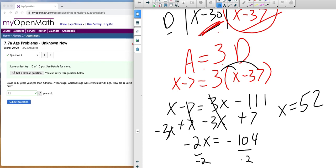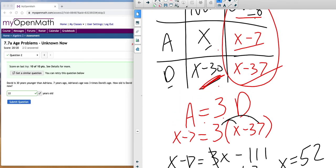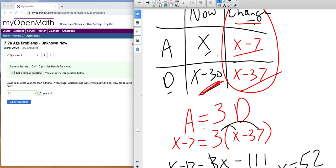So what does that mean in our problem? That means Adriana now is 52. David now is 52 minus 30, so 22. Adriana after the change was 45, and David after the change was 15.